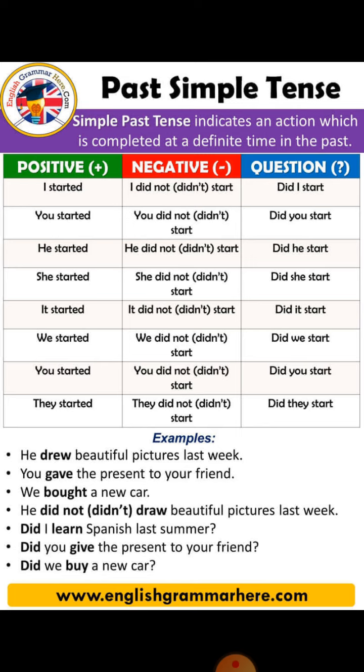Yesterday, last night, day before yesterday, two days ago, last month, previous — these are the indicators of past time which we use in past tense.